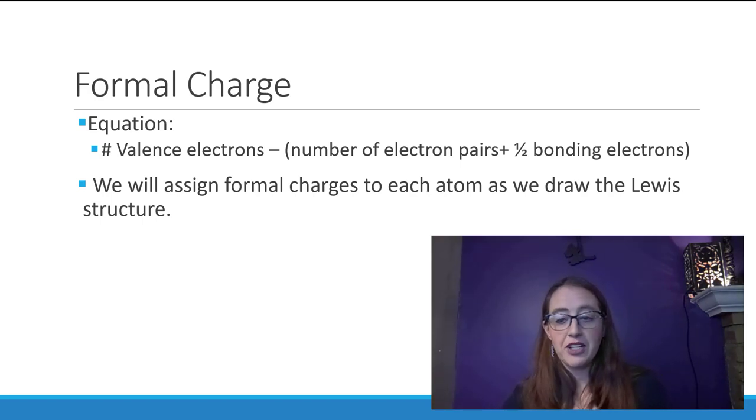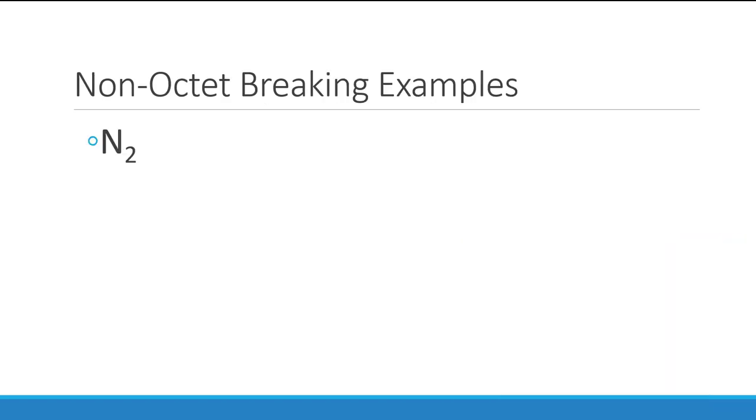Let's start with N2. N has five valence electrons from the periodic table, and both of them do, so that's ten electrons. In this case, we just have two atoms, so we can go ahead and place the two atoms apart from each other with a single bond in between.